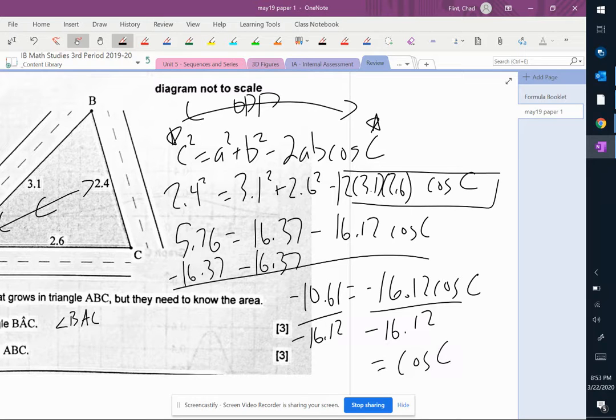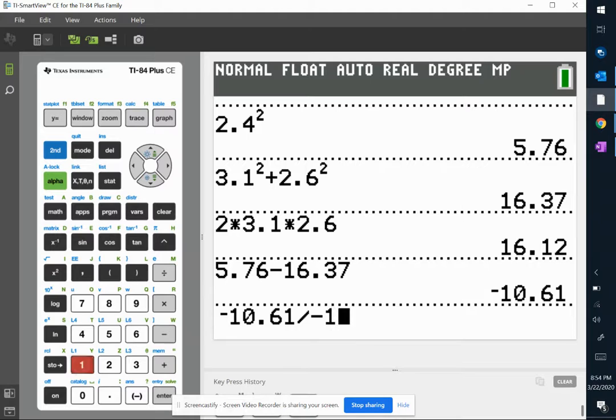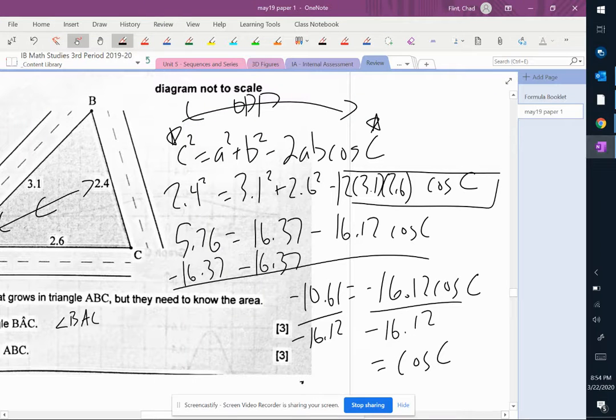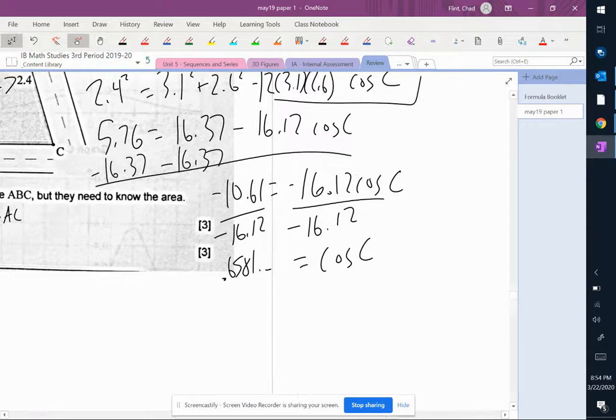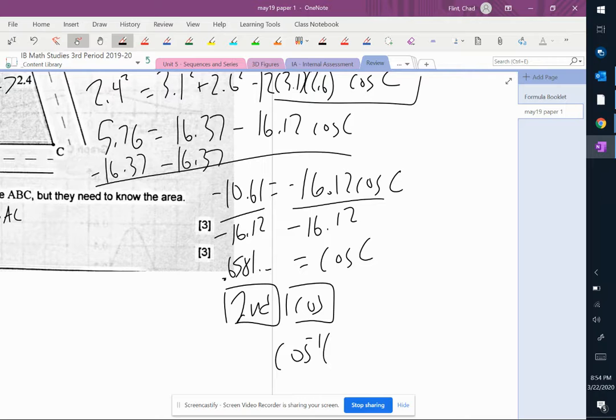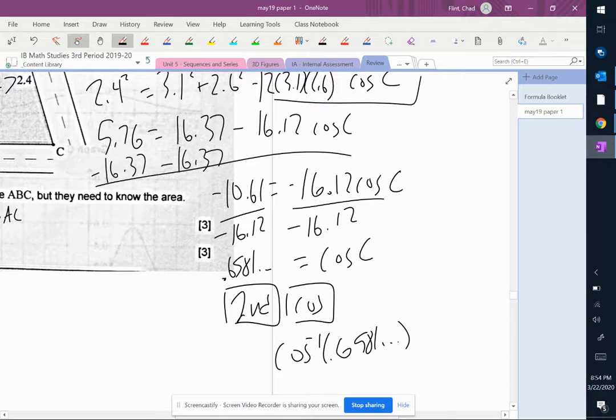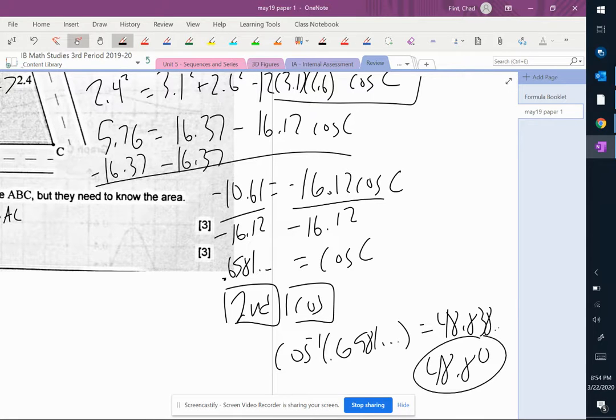That's going to give us cosine C equals a decimal, 0.6581. I'm going to throw it back to this to get an angle out of here. We got to hit the second cosine so we can get cosine inverse. 48.838. Three sig figs, 48.8 degrees. We'll come back and use that in the next part in a second here.